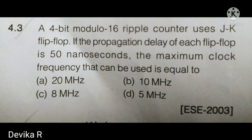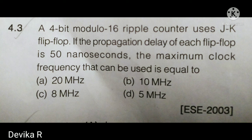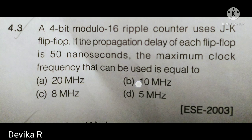If they ask about a synchronous counter instead, we do not multiply by the number of flip-flops. We simply find 1 / 50 ns, because in a synchronous counter all flip-flops are clocked simultaneously at the same time. So whether there are four, six, or eight flip-flops, the propagation delay remains the same for a synchronous counter. Please keep that in mind.